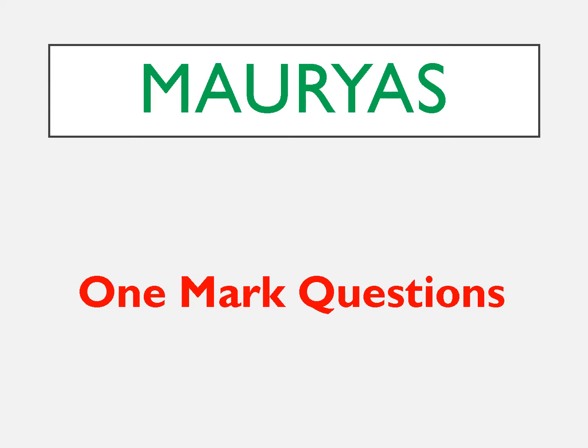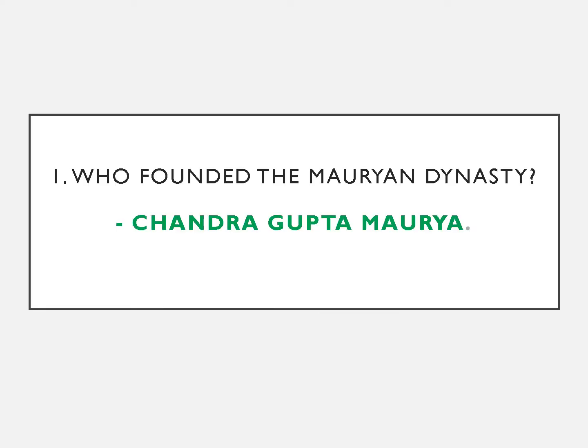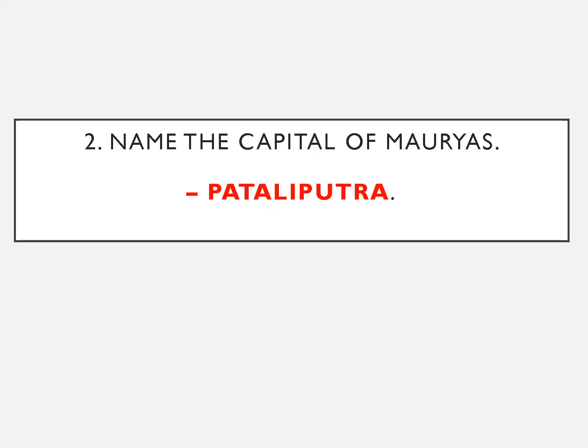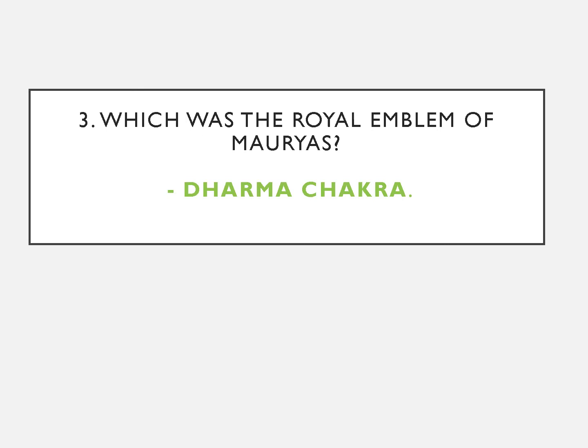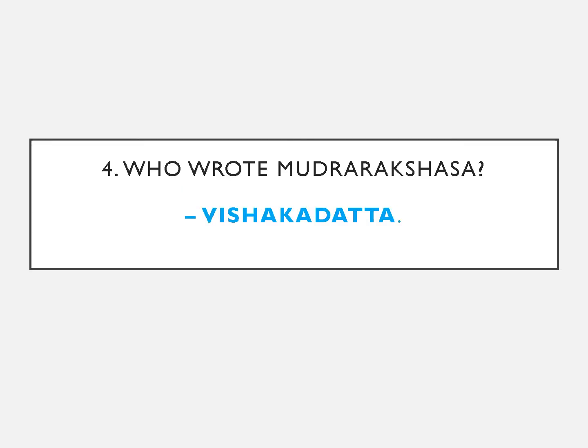Welcome to the class on Mauryas. Let's revise one-mark and two-mark questions. Who founded the Mauryan dynasty? The answer: Chandragupta Maurya. Name the capital of Mauryas. The answer: Pataliputra. Which was the royal emblem of Mauryas? The answer: Dharma Chakra. Who wrote Mudra Rakshasa? The answer: Vishakadatta.